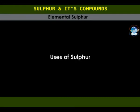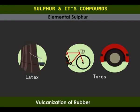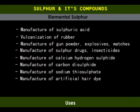Sulfur is used in the manufacture of sulfuric acid, which has a large variety of industrial uses. It is used in the vulcanization of rubber — that is, hardening of rubber to a tough substance used to make tires. It is used in the manufacture of gunpowder, explosives, matches and fireworks; manufacture of sulfur drugs, insecticides and fungicides; manufacture of calcium hydrogen sulfide for bleaching wood pulp; manufacture of carbon disulfide; and manufacture of sodium thiosulfate, which is used in photography and manufacture of artificial hair dyes.